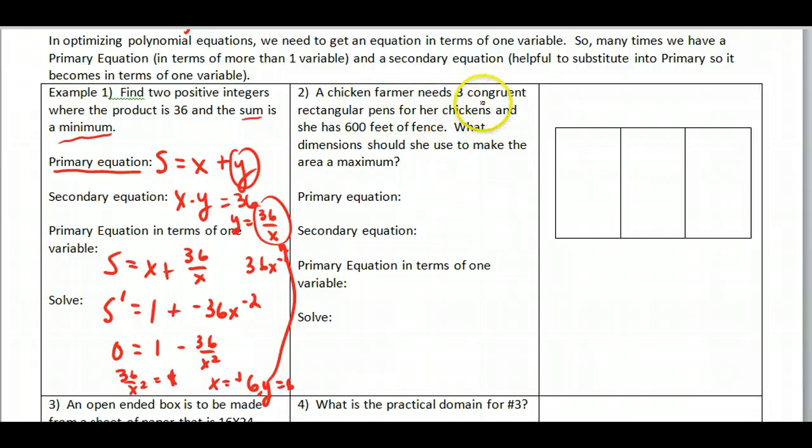Okay, and then if I look at this next equation, a chicken farmer needs three congruent rectangular pens for chickens and she has 600 feet of fence. What dimensions should she use to make the area a maximum? Well what we want to do is we need to label all these pieces because that goes into the fencing that we're going to be using. So I'm going to call this x, this x, and this x, and similarly down here.